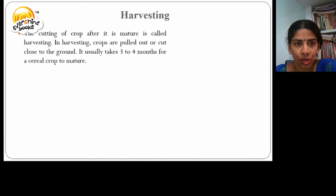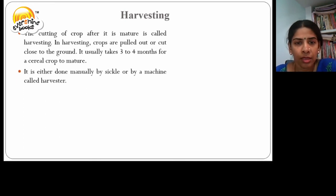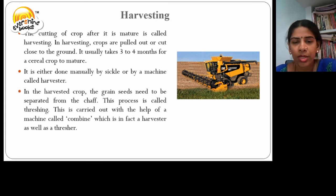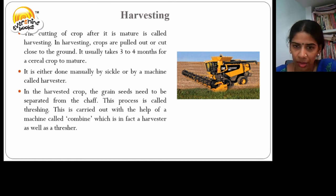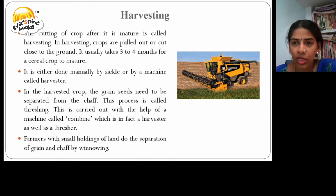The cutting of crop after it is matured is called harvesting. In harvesting, crops are pulled out or cut close to the ground. It usually takes 3-4 months for a cereal crop to mature. It is done manually by sickle or by a machine called harvester. In the harvested crop, the grain seeds need to be separated from the chaff. This process is called threshing. It is carried out with the help of a machine called a combine, which is in fact a harvester as well as a thresher. Farmers with small land holdings do the separation of grain and chaff by winnowing.